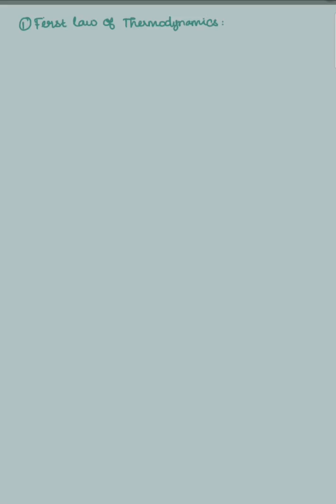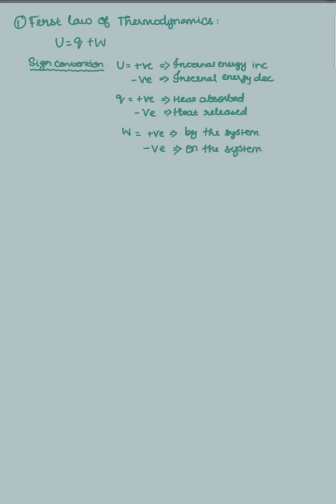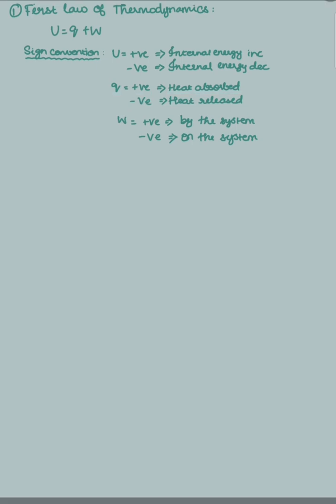According to the first law of thermodynamics, ΔU is equal to Q plus W. The sign convention for this entire chapter is: when internal energy increases, ΔU will be positive; when internal energy decreases, ΔU will be negative. When heat is absorbed by the system, Q is positive; when heat is released by the system, Q will be negative. Work done by the system is positive, while work done on the system is negative.